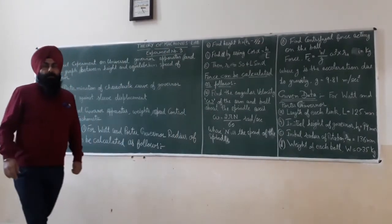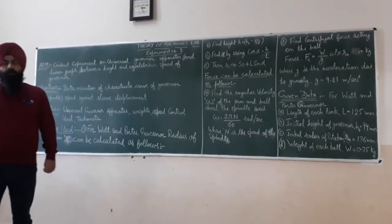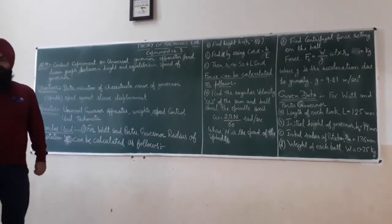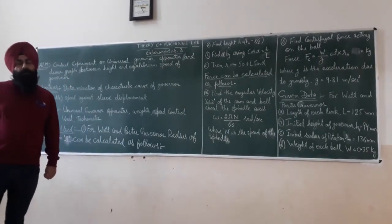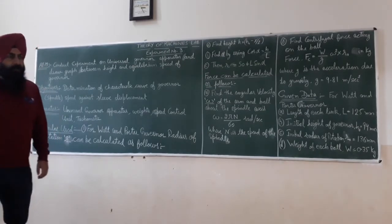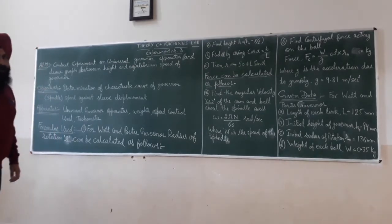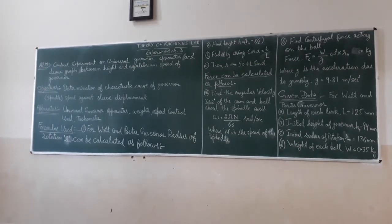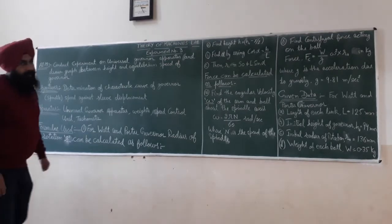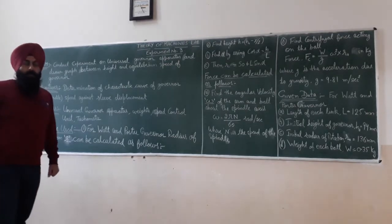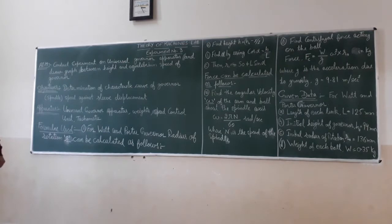Good morning dear students, welcome to your machine lab. Today we perform our third experiment. The aim of the third experiment is to conduct an experiment on the universal governor and draw the graph between height and equilibrium speed of the governor.